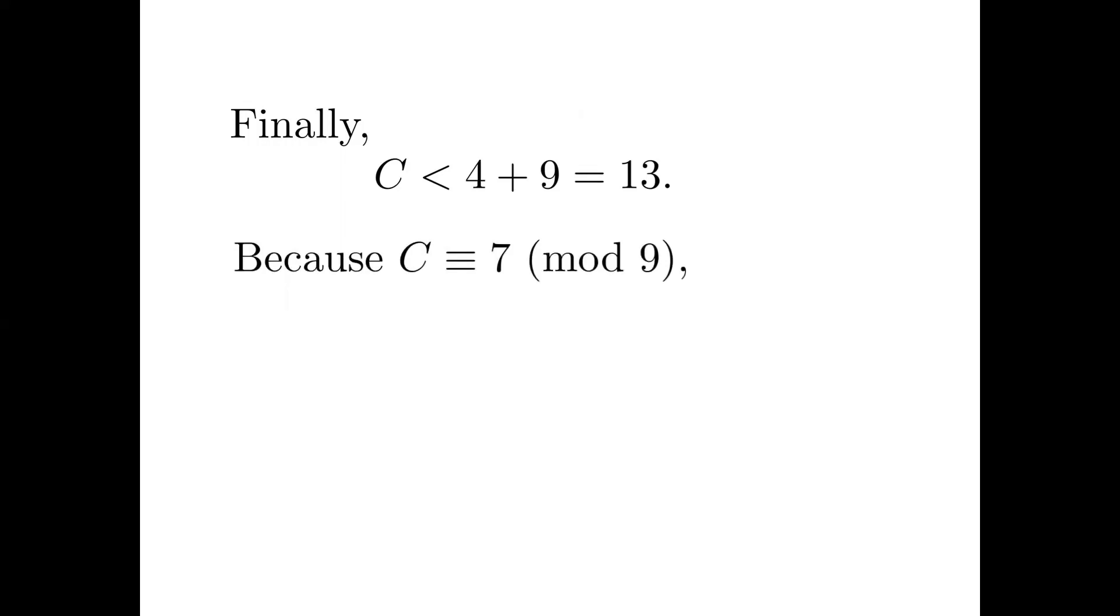On the one hand, we know C has remainder 7 when divided by 9, and C is less than 13. So the only possibility is that C equals 7.